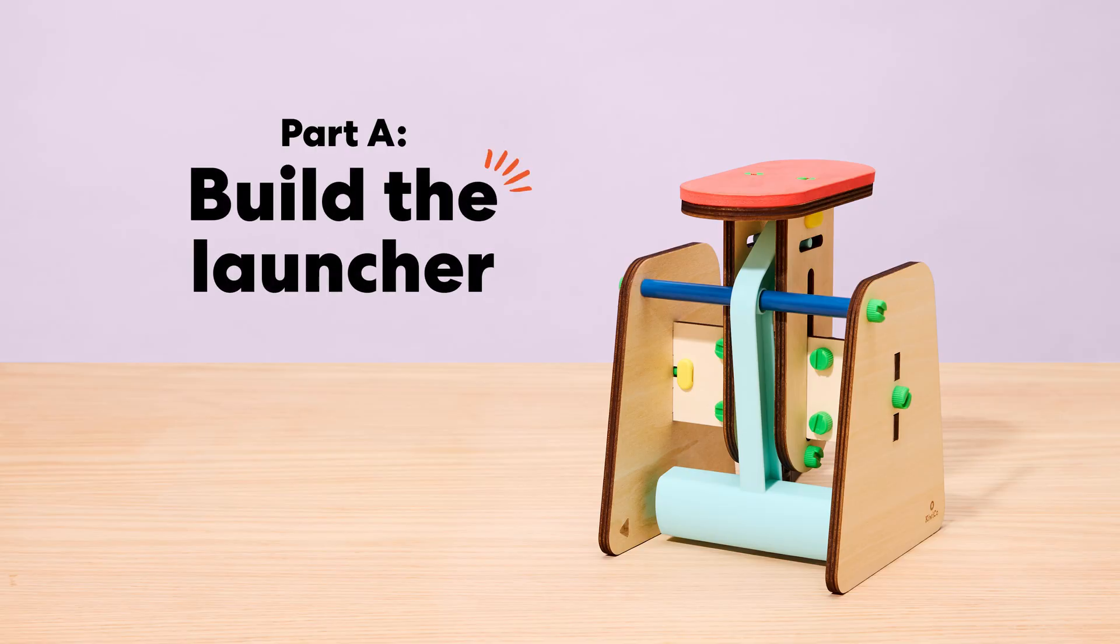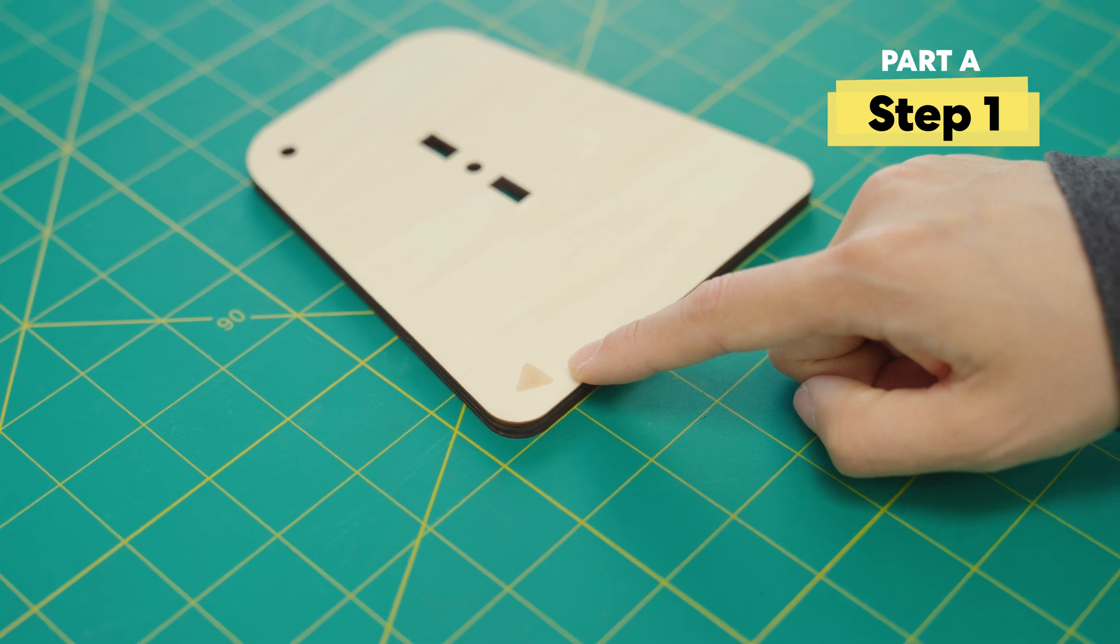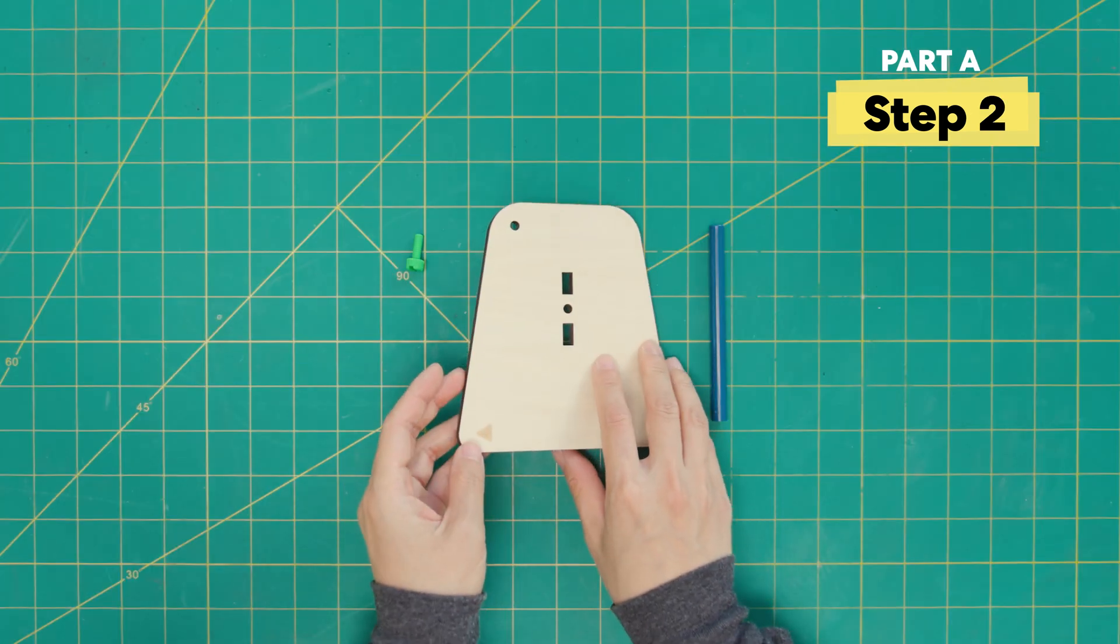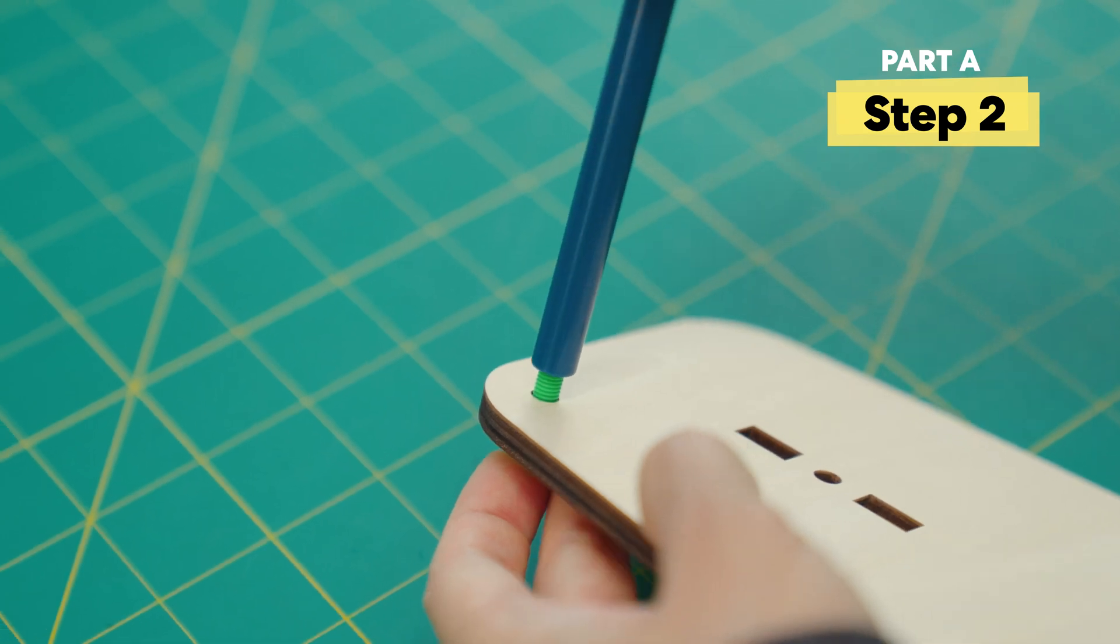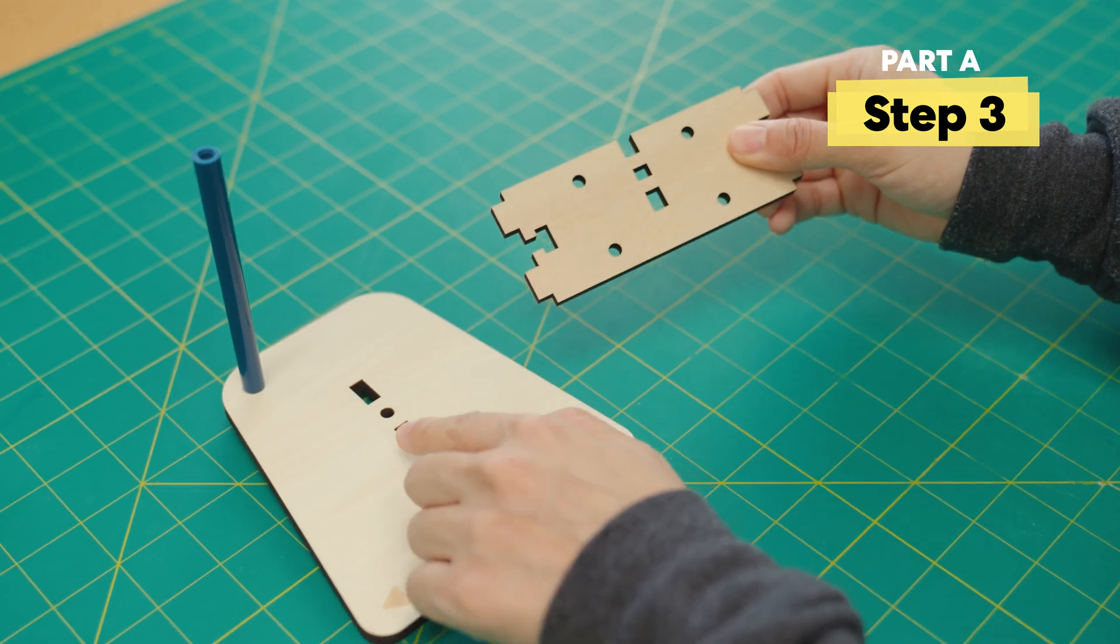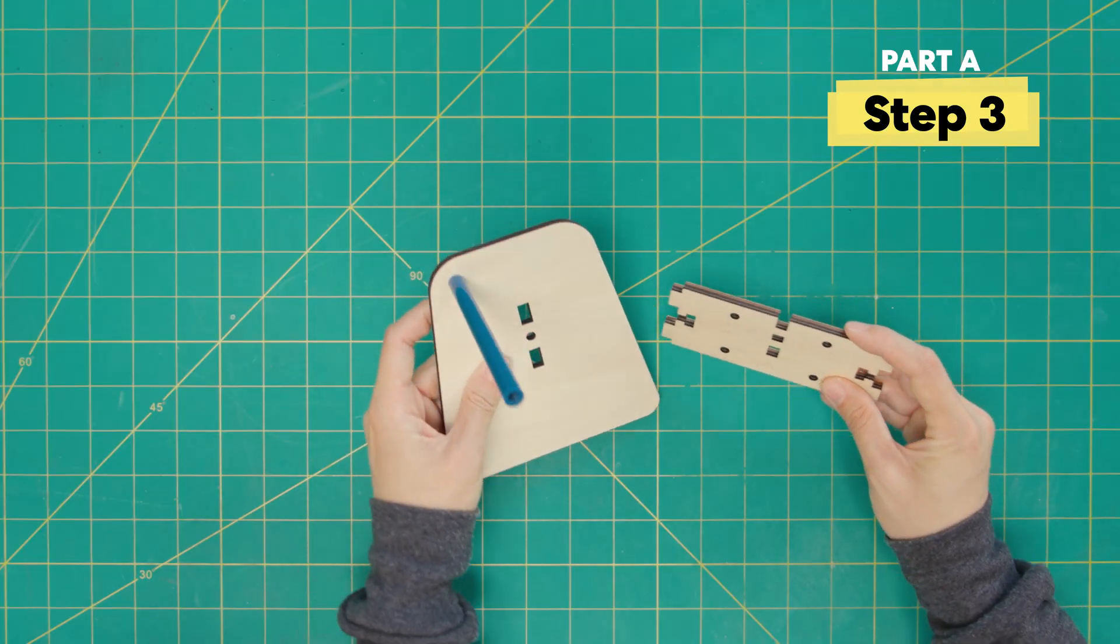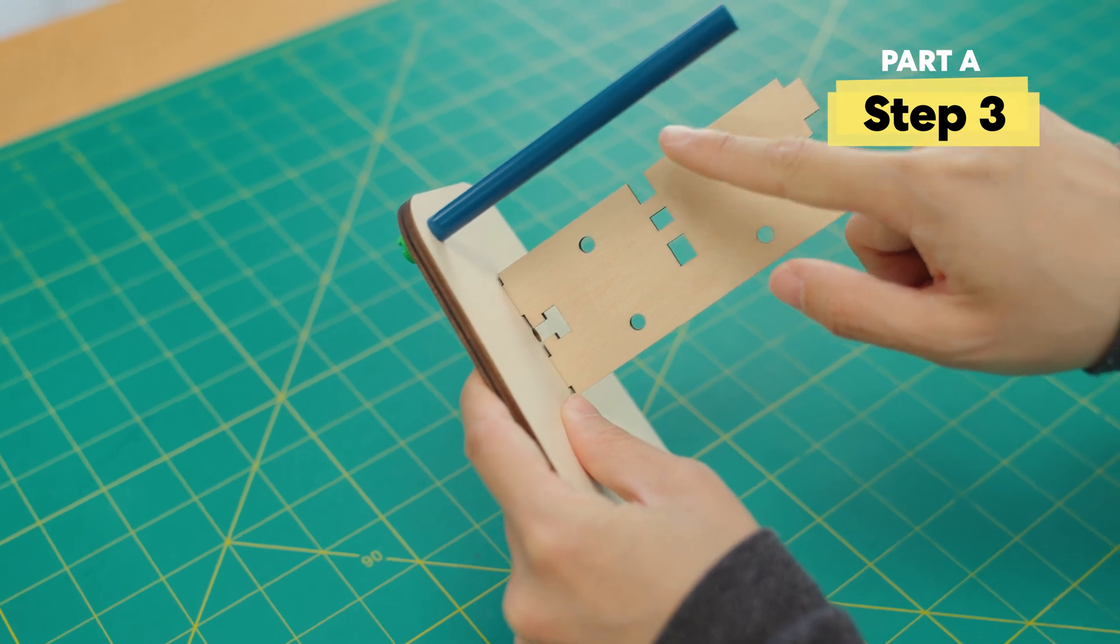First things first, let's build the launcher. Let's grab this large wooden piece with the arrow. Make sure the arrow side is up and pointing to the bottom left. Next, grab a large rod and green bolt. Twist them together here. Then attach this wooden launcher part here.